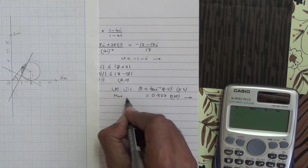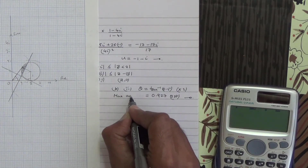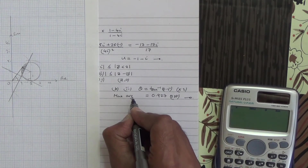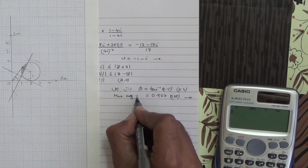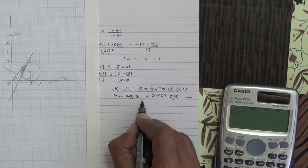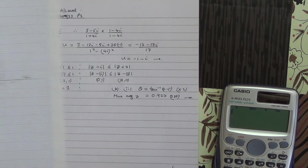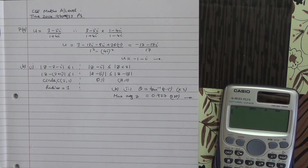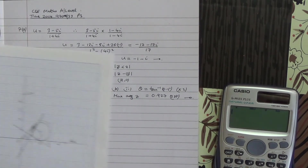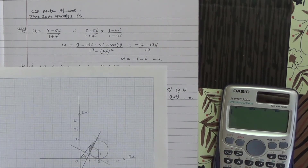That's the maximum value of the argument of z for points lying in the shaded region. So here we are for this question. Take care, thank you.